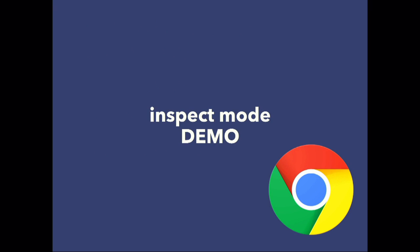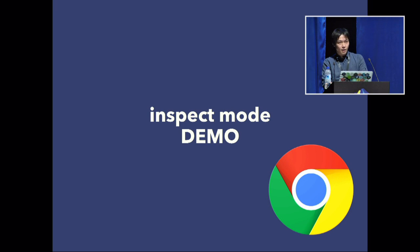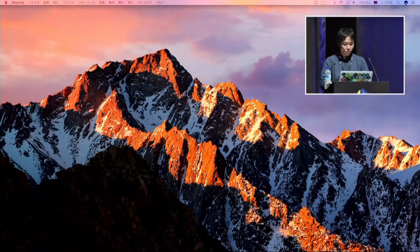I'll show you the demo for Inspect Mode with Chrome. Before this feature, we needed to use the Node.js inspector — a third-party module. But with Node.js v6.3, you don't need any third-party libraries. You just need Node and Chrome.